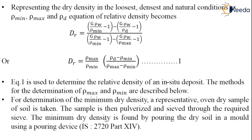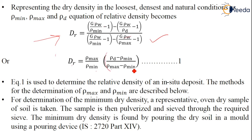Representing the dry density in looser, densest, and natural conditions, we have the equation: Dr = (G × ρW / ρmin) − 1. After simplification, Dr = (ρmax / ρmin) × (ρD − ρmin) / (ρmax − ρmin). This equation is used to determine the relative density of an in-situ deposit.